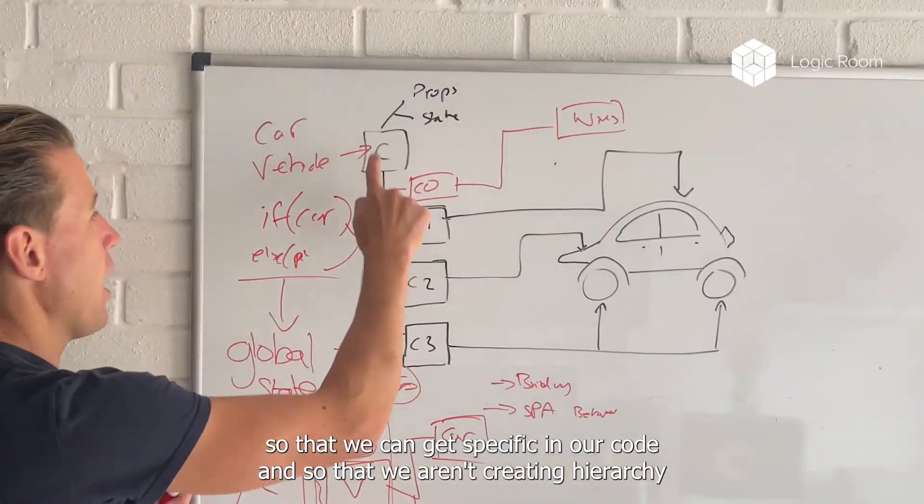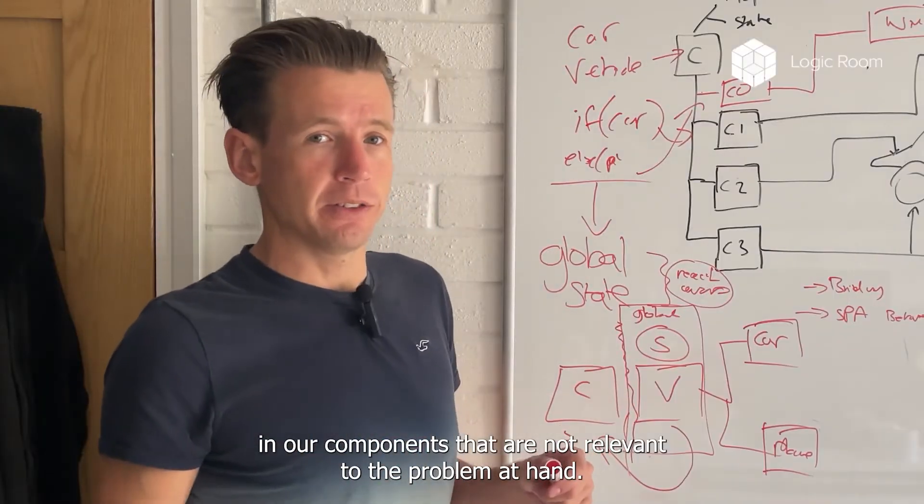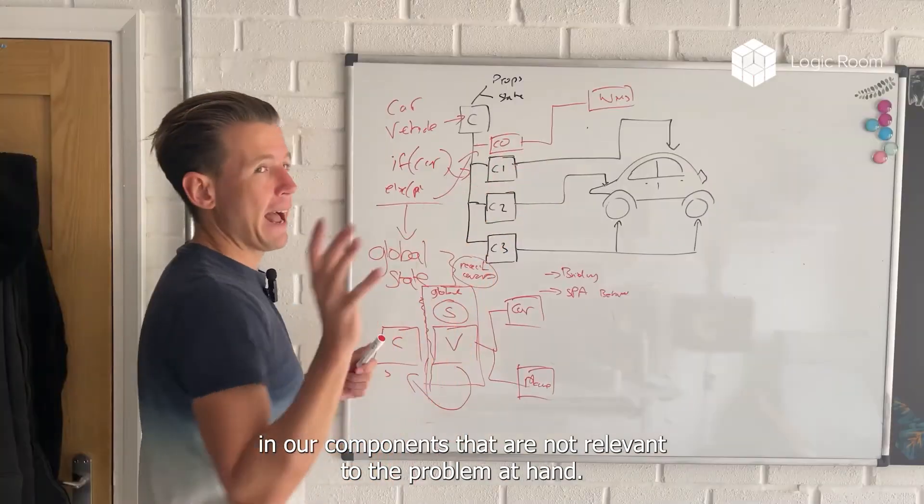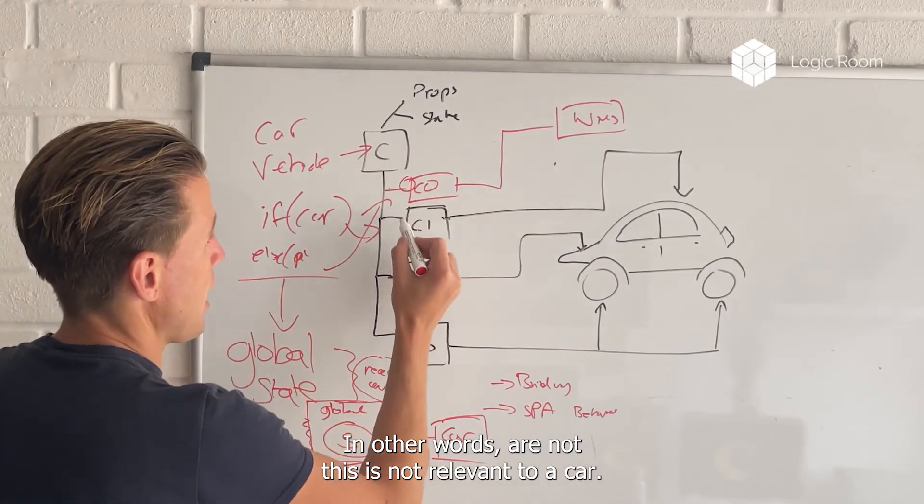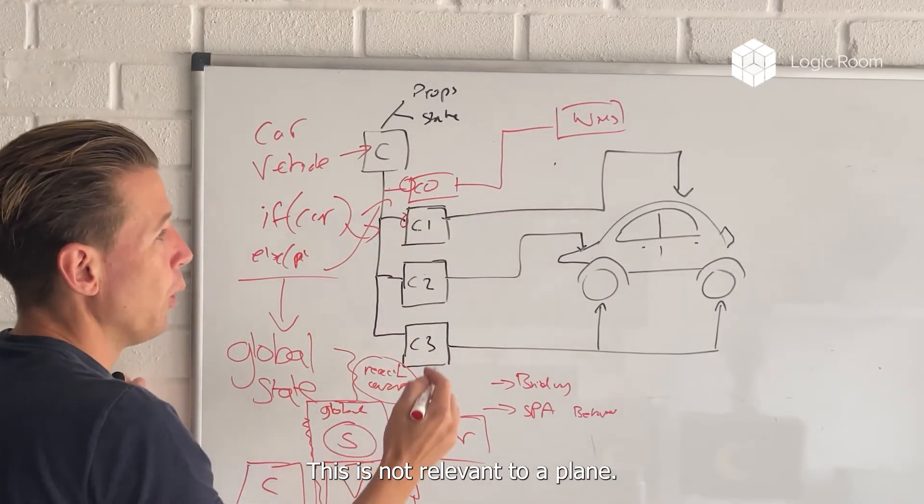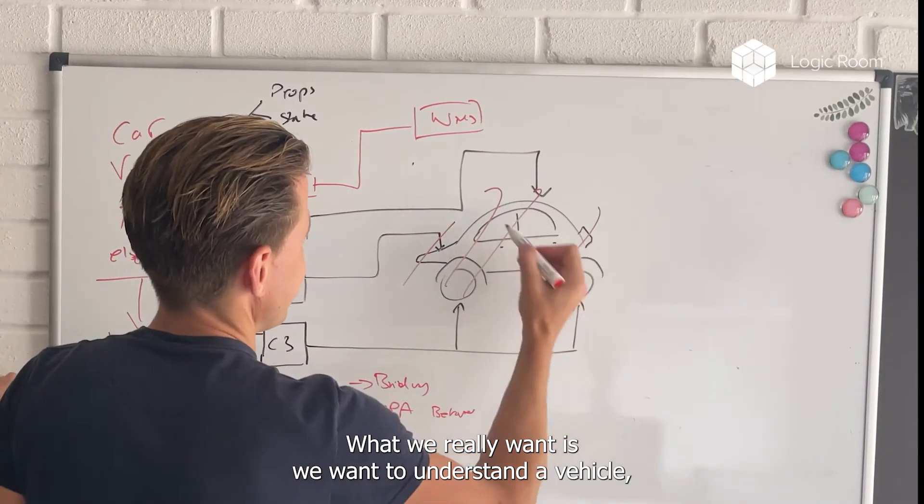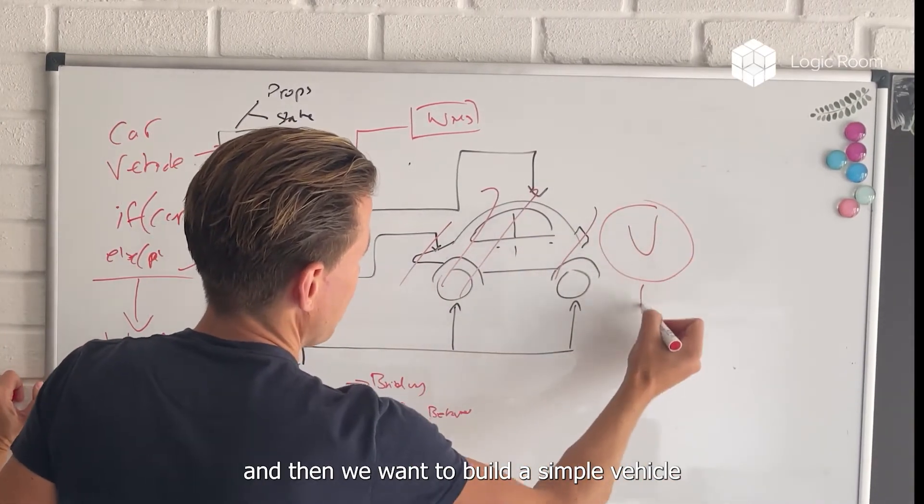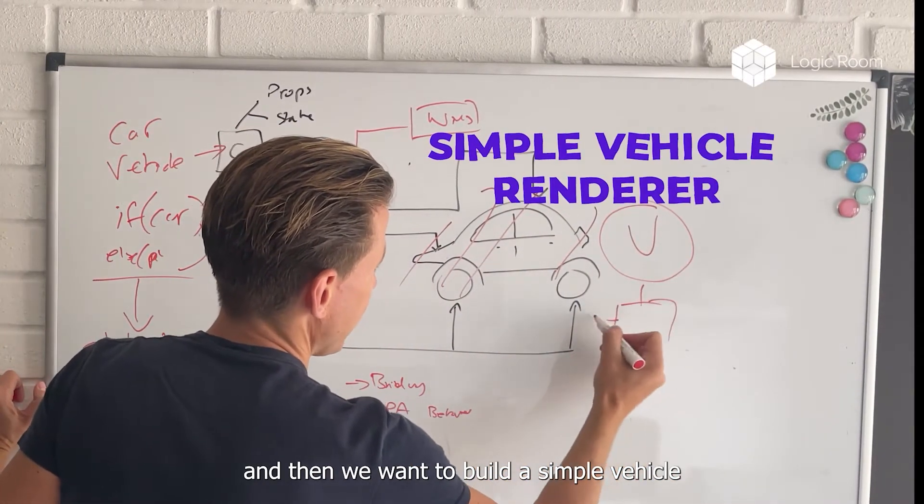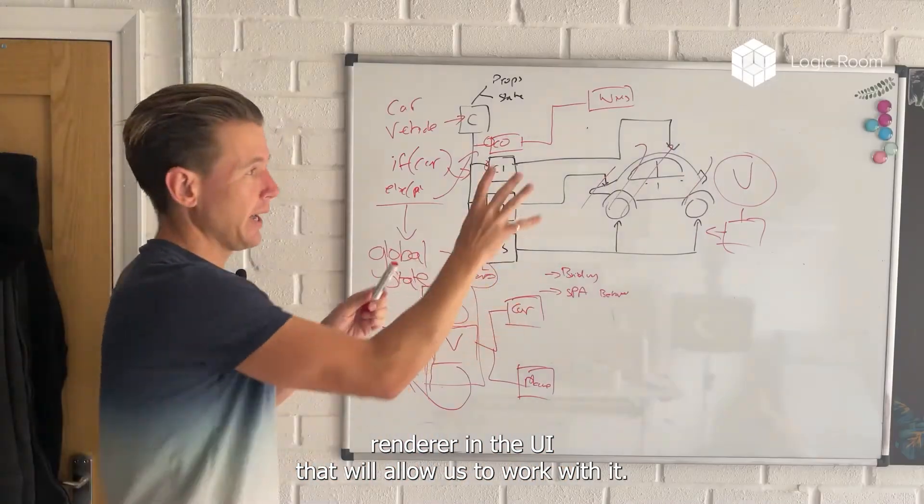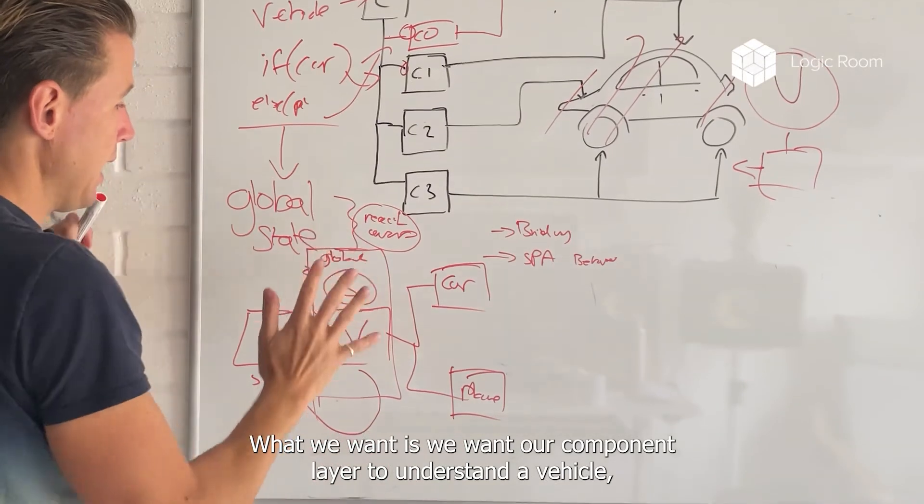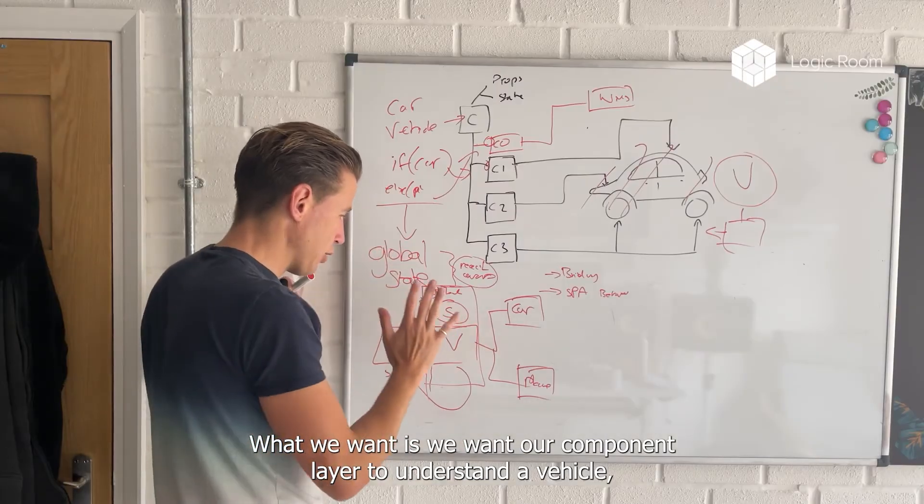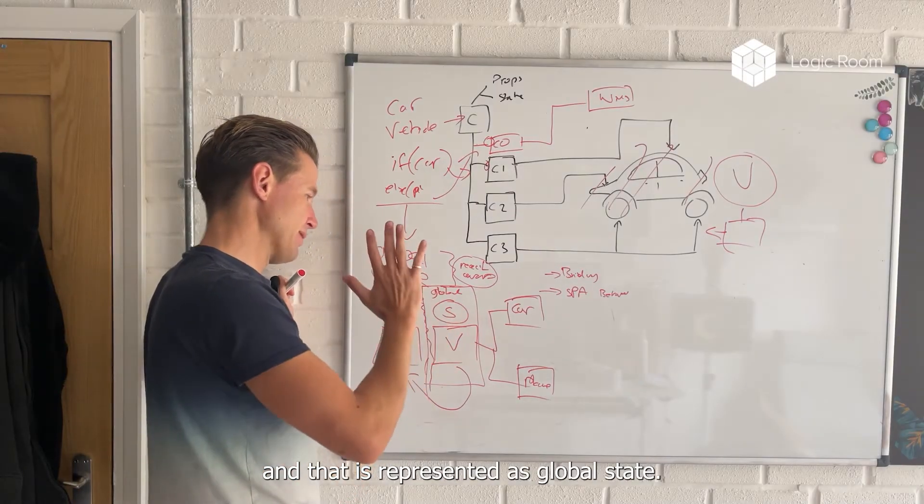So that we can get specific in our code, and so that we aren't creating hierarchy in our components that are not relevant to the problem at hand. In other words, this is not relevant to a car, and this is not relevant to a plane. What we really want is we want to understand a vehicle, and then we want to build a simple vehicle renderer in the UI that will allow us to work with it.